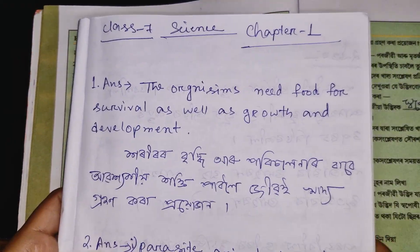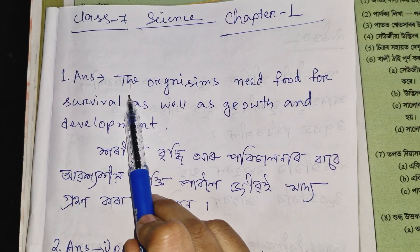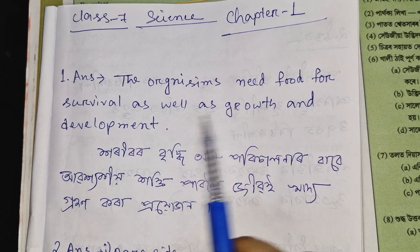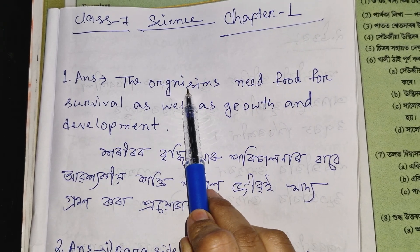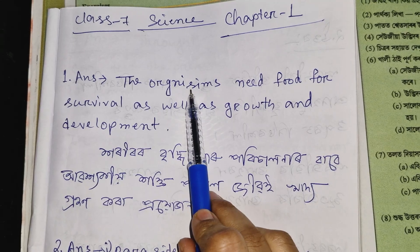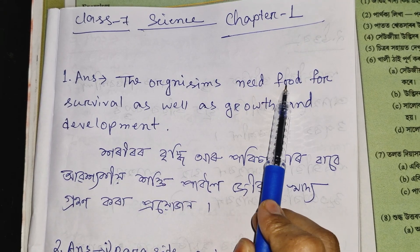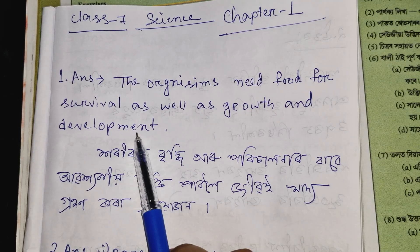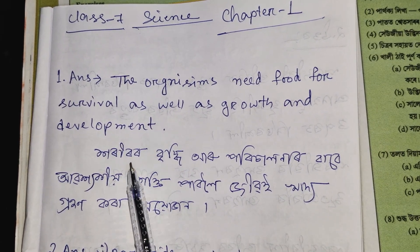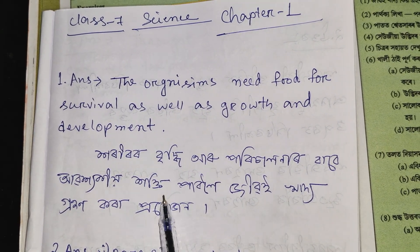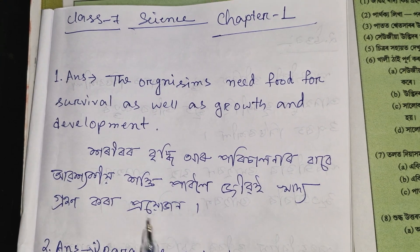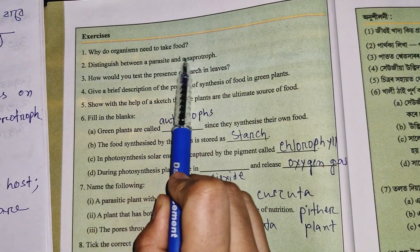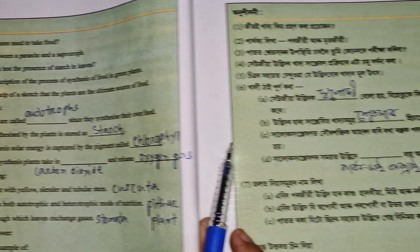Organisms need food for survival as well as growth and development. The second question is: distinguish between a parasite and a saprophyte.